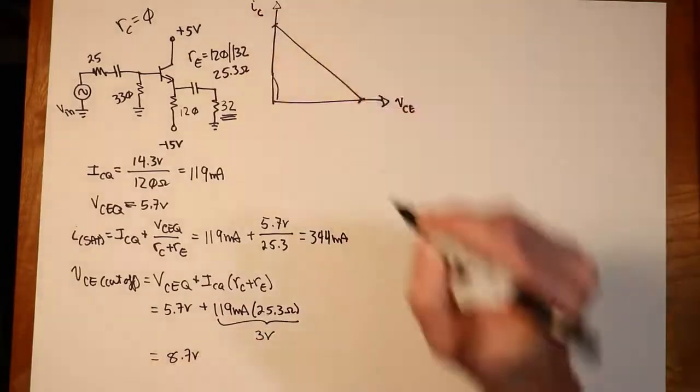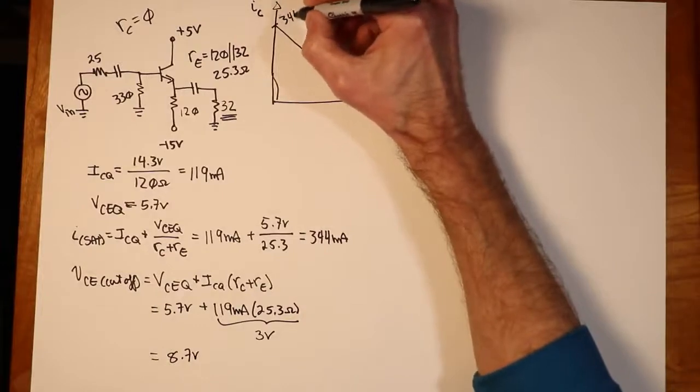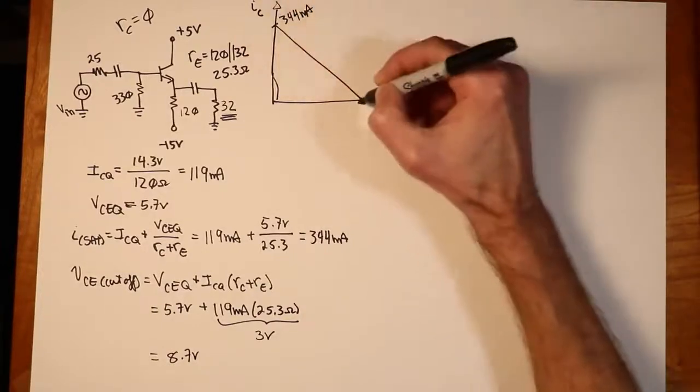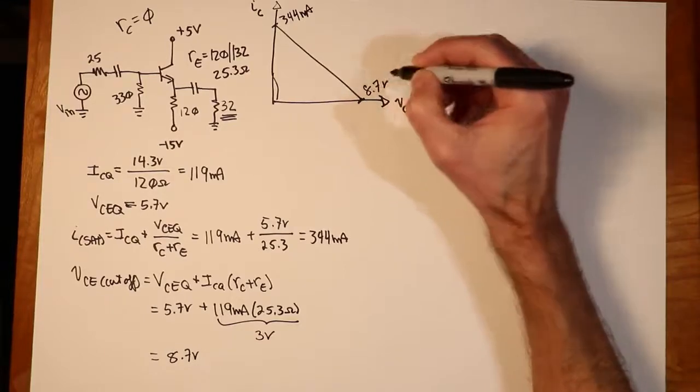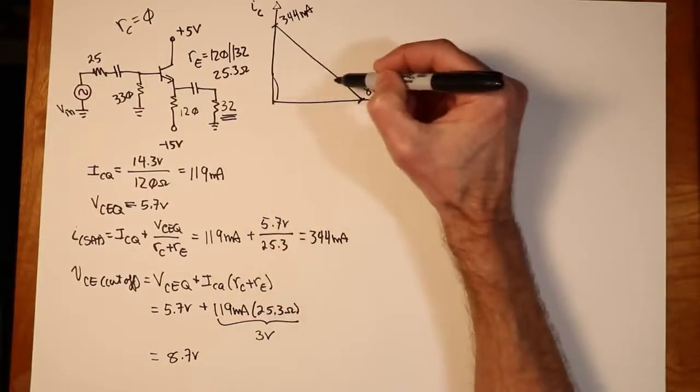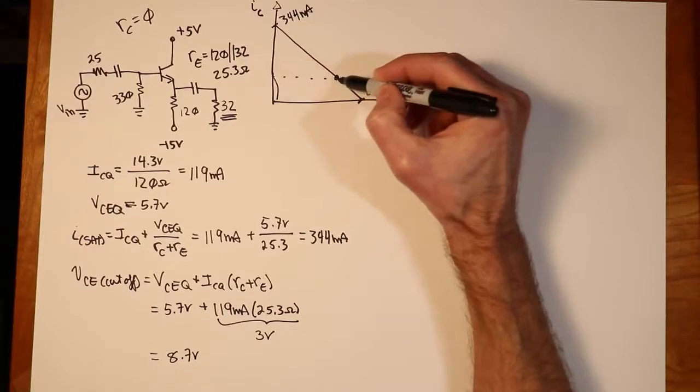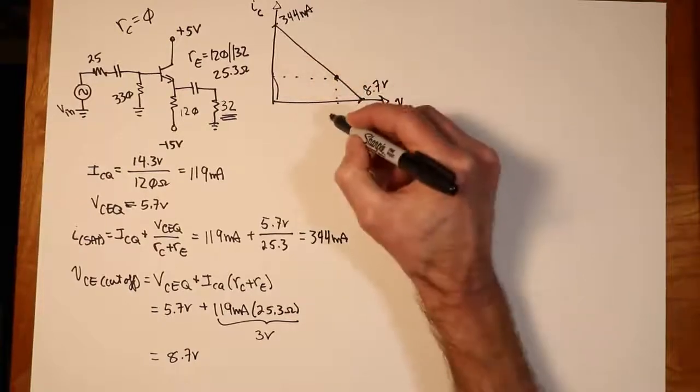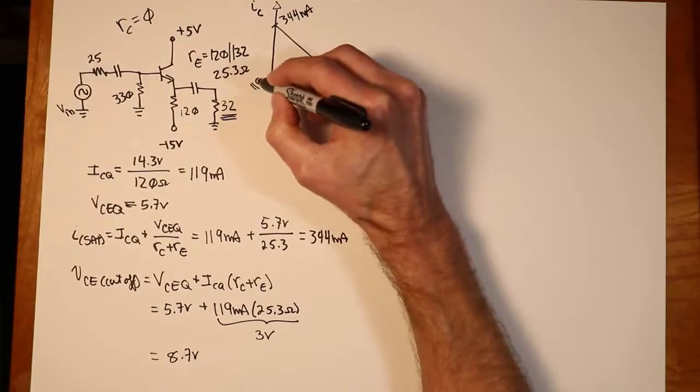Now I can plot this. I know this point up here is 344 mils. I know this end point over here is 8.7. The Q point is 5.7 volts over. So it's down here somewhere. So that's 5.7 there. And then we got our 119 right back there.